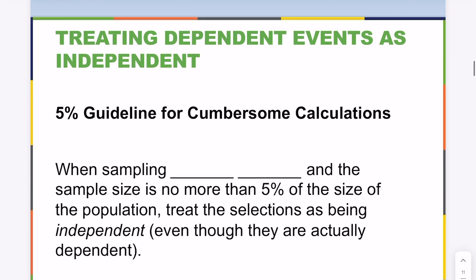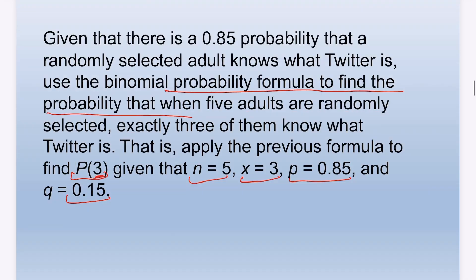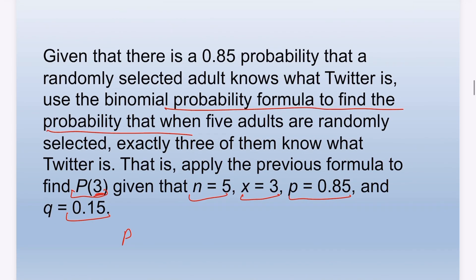Here's another example: given that there is a 0.85 probability that a randomly selected adult knows what Twitter is, use the binomial probability formula to find the probability that when five adults are randomly selected, exactly three of them know what Twitter is. Apply the formula to find P(3) given n=5, x=3, p=0.85, q=0.15.